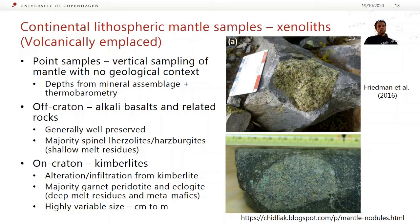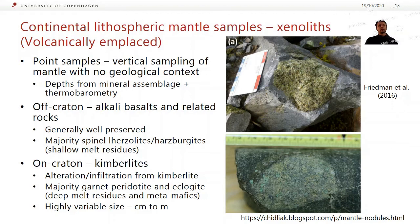Off cratons — so in younger continental lithosphere — these tend to be found in alkali basalts and related rocks. These can be pretty well preserved; a lot of them are spinel lherzolites or harzburgites, and these are shallow depleted melt residues. On cratons, our main source of xenoliths is from kimberlites. These tend to be pretty altered — kimberlites are very reactive and will react with the xenoliths they're carrying, with kimberlite infiltration along cracks, which can mask some of the geochemical signatures.